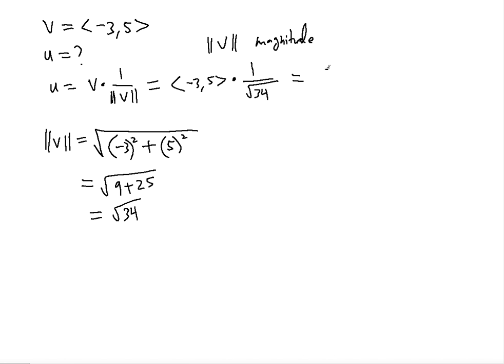So you're going to distribute to each component, and then you're going to have <-3/√34, 5/√34>. So you have found a unit vector in the same direction as the given vector V.